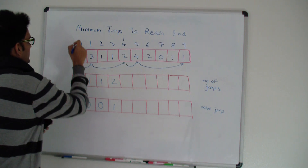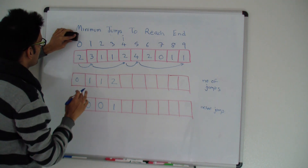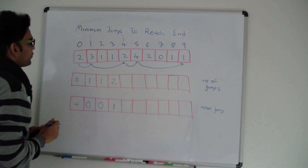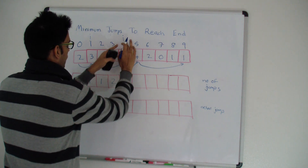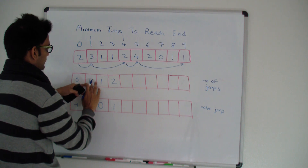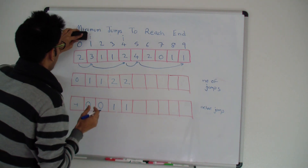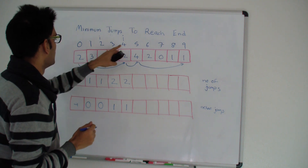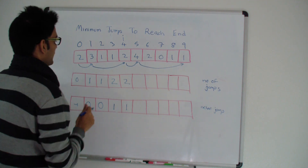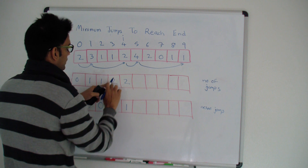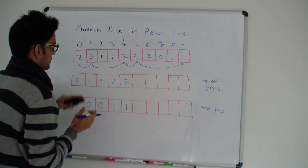Now i is four and j is zero. Can I reach i from zero? No, at max I can jump two steps. When j is one, can I reach four from one? Yes, I can jump three steps from here. So the minimum number of jumps to reach four is jumps to reach one plus one, which is two. We indicate reaching four from one. Can I reach four from two? No, the value is one. Can I reach four from three? Yes, but it would take three jumps, which is not better than two, so we don't update.